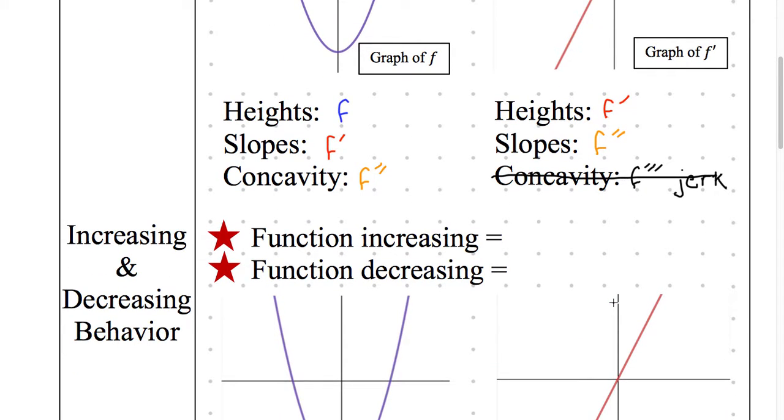The most important thing that I can teach you today is what the definition is for function increasing. It will look different on different types of graphs, like the graph of F versus the graph of F prime. But this is the definition that we need. F increasing is whenever F prime is greater than zero. That is a definition that needs to be locked into your memory. What's the definition of F increasing? F prime greater than zero.